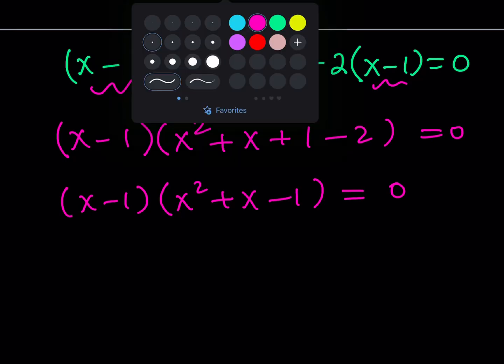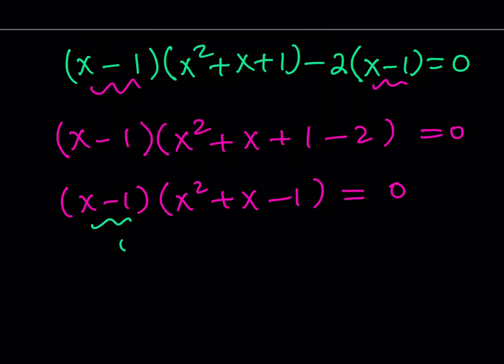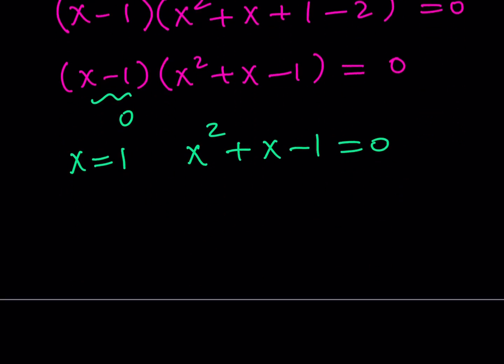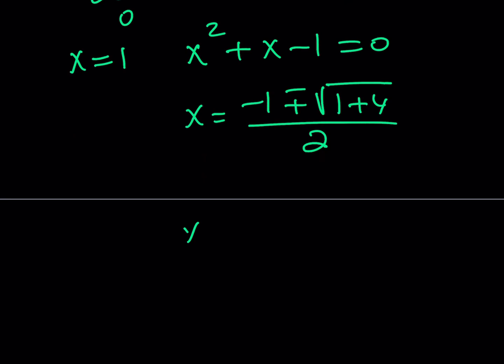x minus 1 equals 0, obviously we already know that. This gives us x equals 1. What about the second part? Well, the second part is quadratic, and we can solve it using the quadratic formula. x equals negative b plus minus the square root of b squared, which is 1, minus 4ac, which is plus 4, and that gives us the nice radical which gives us the golden flavor. x equals negative 1 plus minus root 5 over 2. That's another solution besides x equals 1.